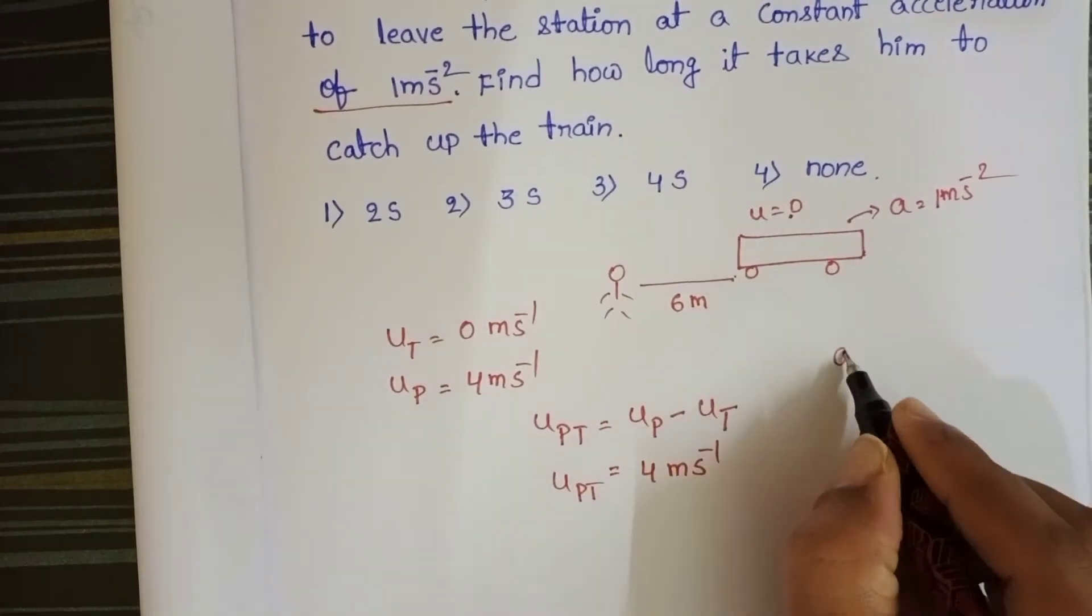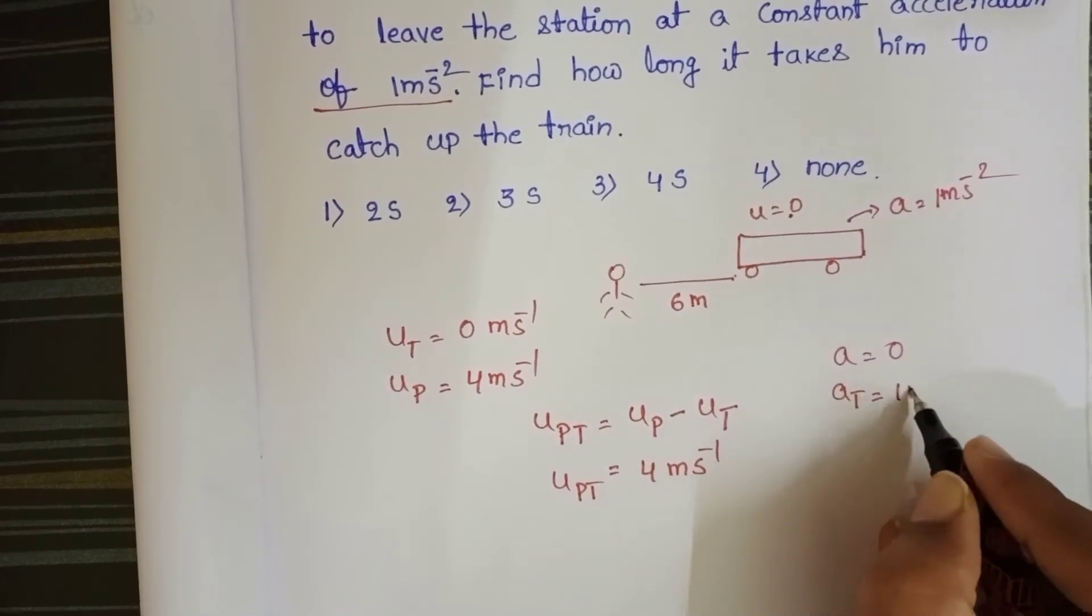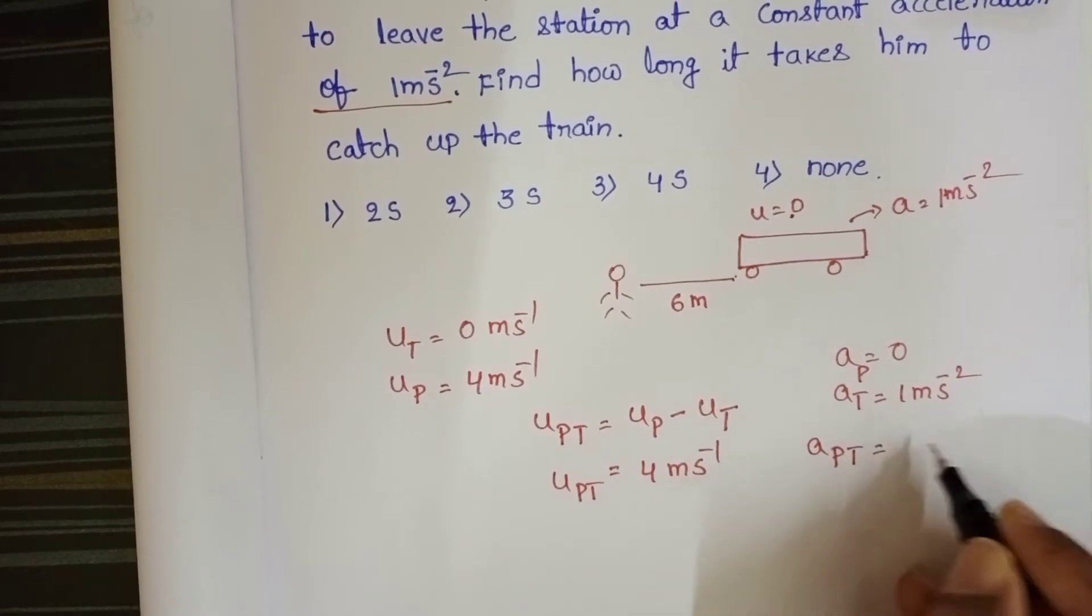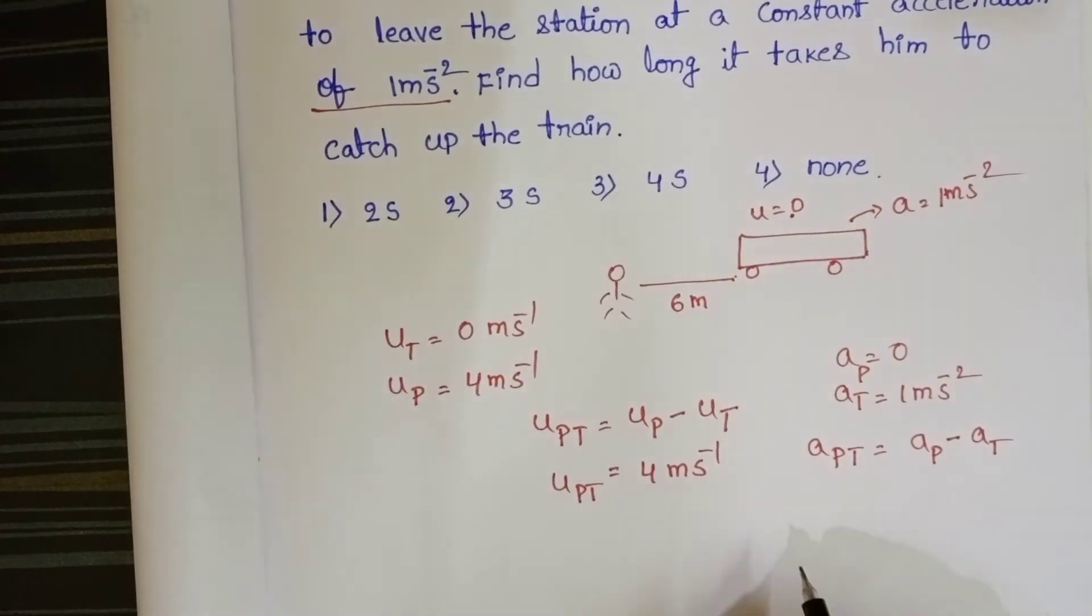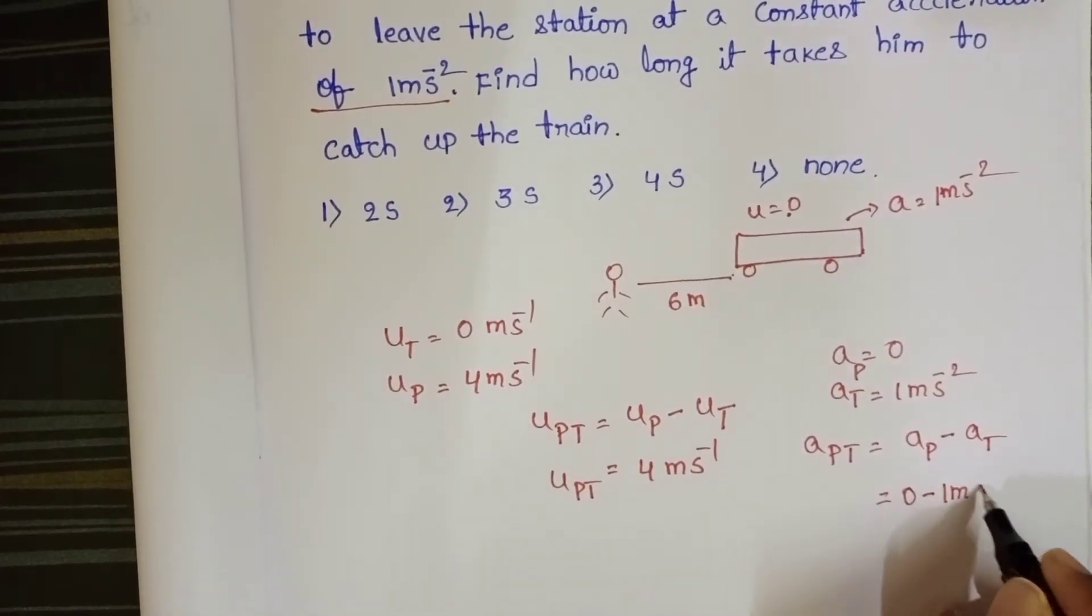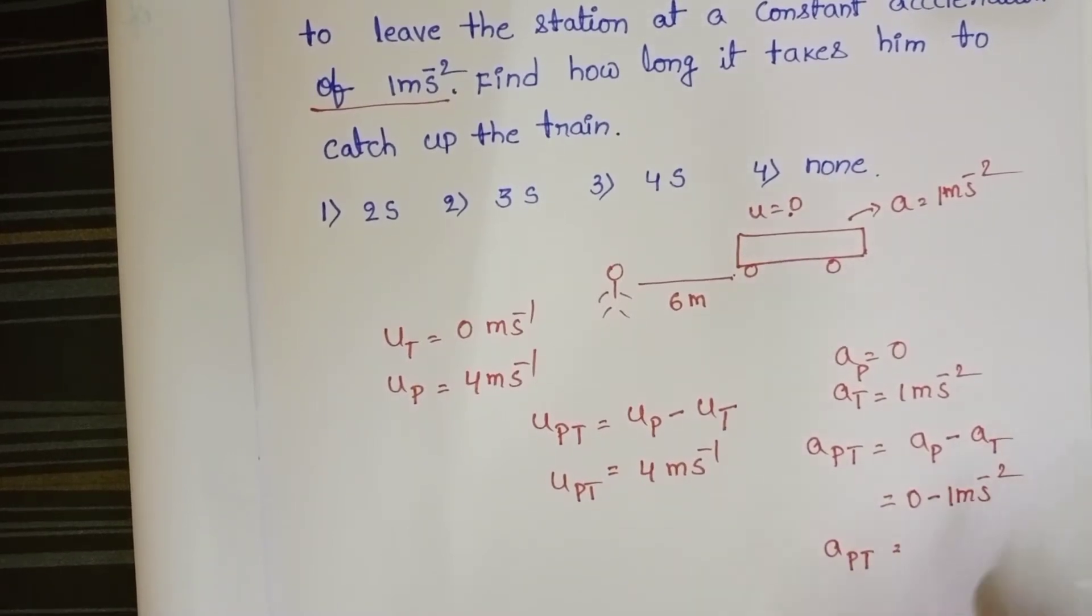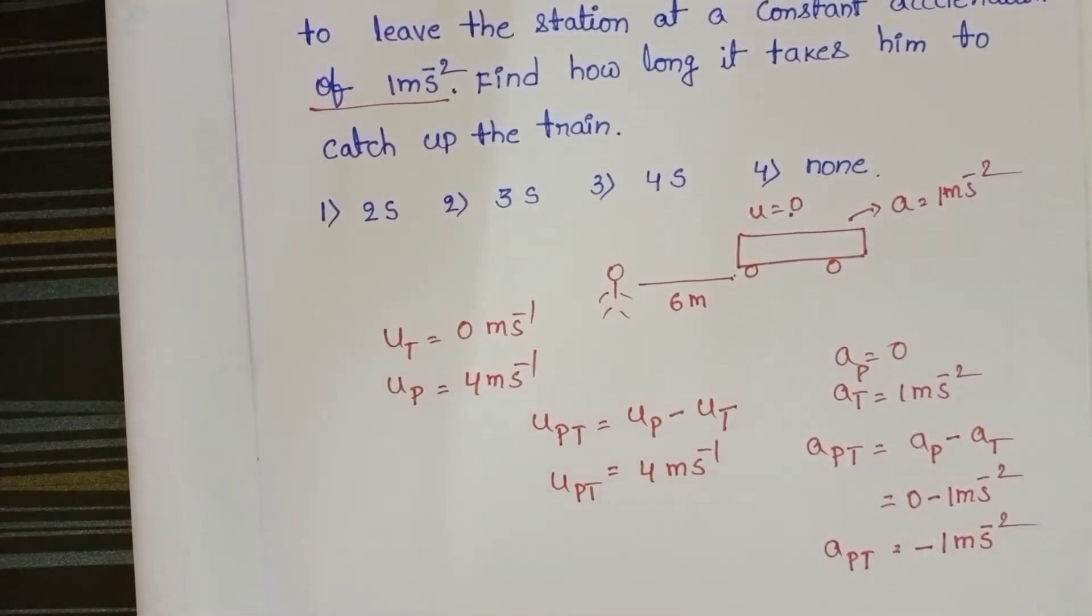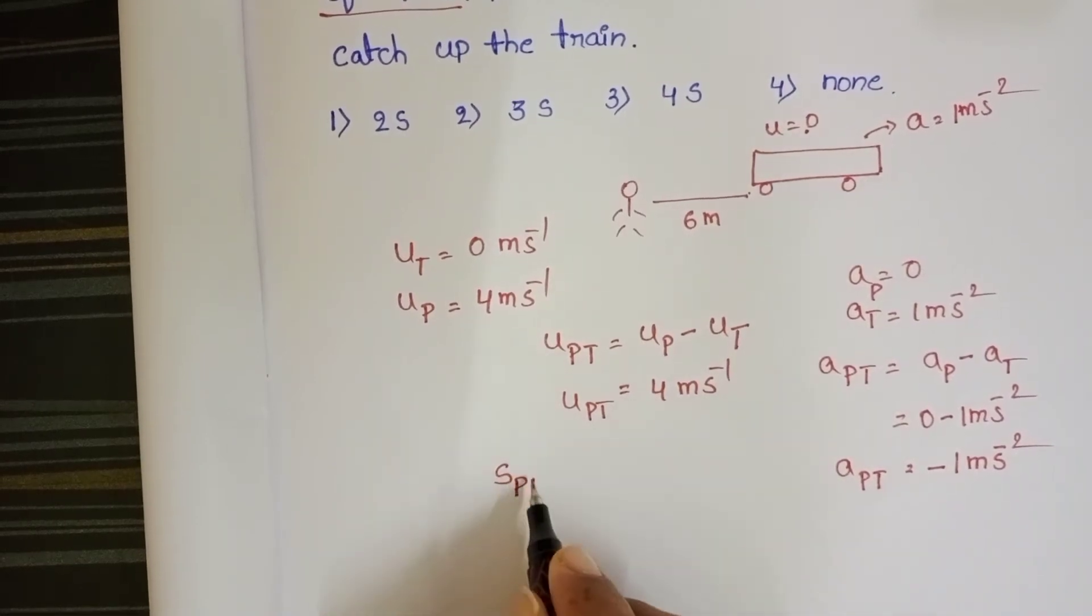Then, acceleration of the person is equals to 0, and acceleration of the train is 1 meter per second squared. Relative acceleration of the person with respect to train is equals to minus 1 meter per second squared. Distance of the person relative to the train is equals to 6 meters.